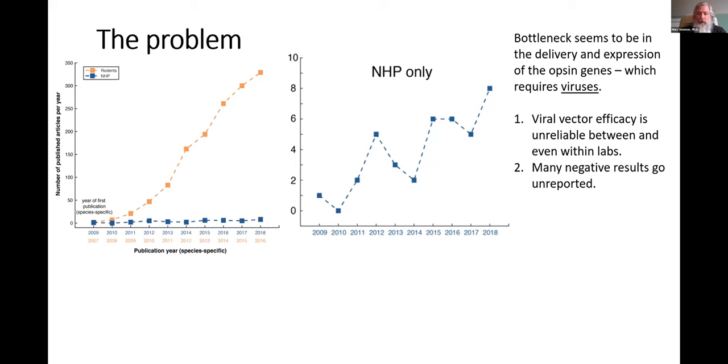A lot of negative results go unreported. The retrograde viruses like rAAV2-retro are mostly untested in primates, and those that are tested have very little follow-up with histology. The main lesson we learned from pooling together all of these non-human primate data is that monkeys are not just big rodents. You can't just take off-the-shelf vectors and use them in monkeys and expect phenomenal results as you would in a mouse or rat.